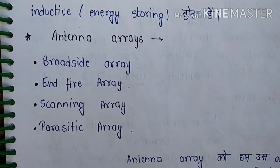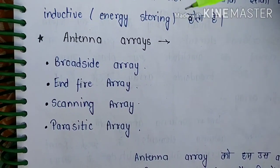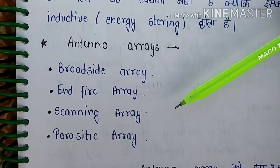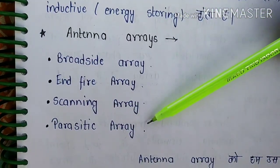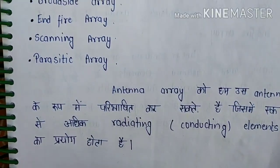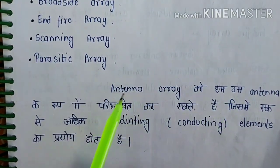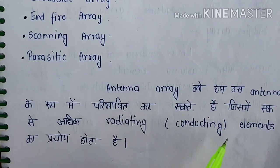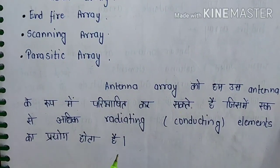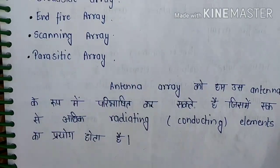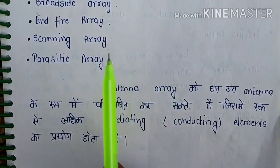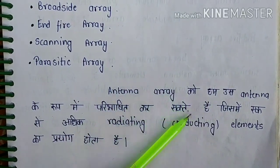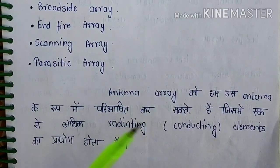Let's talk about antenna arrays. There are four types of antenna arrays: broadside array, end-fire array, scanning array, and parasitic array. The basic difference between an antenna and an antenna array is that an antenna is a single antenna, but an antenna array is a group of antennas.